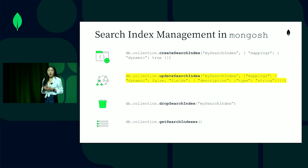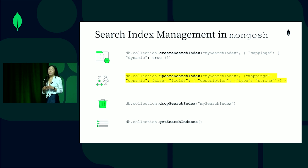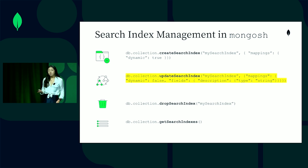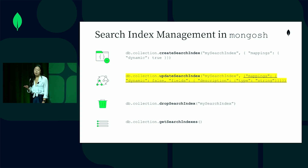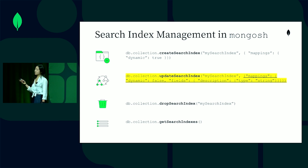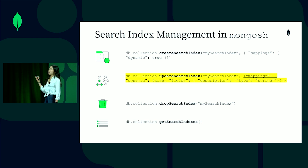Next, I can use update search index if I decide that I want to change something about how my documents are being indexed. All I have to do is pass in the name of my index and pass in the new index definition. Here you can notice that dynamic is now set to false, and I've decided that I want to index the description field as a string type.